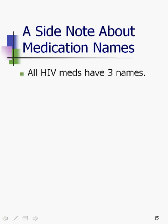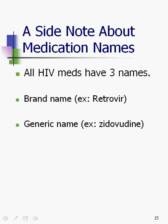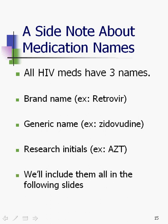Here's a side note about med names: all HIV meds actually have three names. They have the brand name — our example here is Retrovir, which nobody knows. The generic name — the example is Zidovudine. But everybody knows the research initials for this particular drug, which is AZT. All three refer to the same drug. Some drugs are known just by their research initials, some just by their brand name, some just by their generic name. We're going to put all three on all of our slides so you can see them.